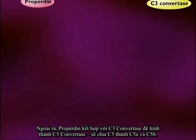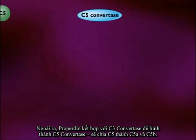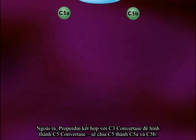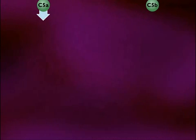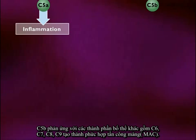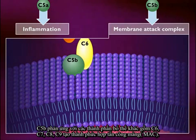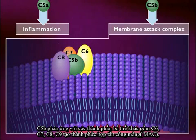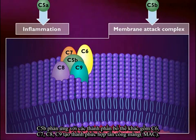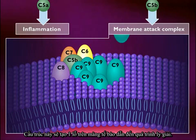Addition of properdin to C3-convertase results in formation of C5-convertase, which cleaves C5 into C5A and C5B. C5A enhances inflammation and acts as a chemoattractant for phagocytes. C5B reacts with other complement components including C6, C7, C8, and C9 to form a membrane attack complex. This structure forms a hole in the cell membrane and causes cells to lyse.